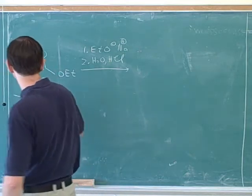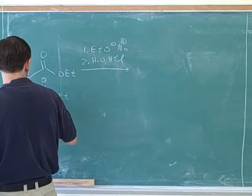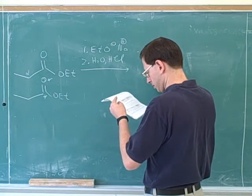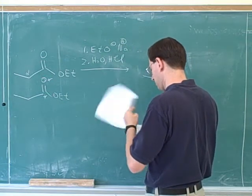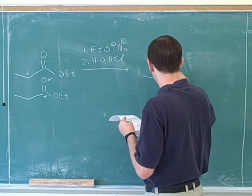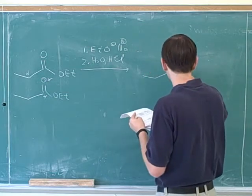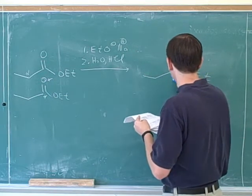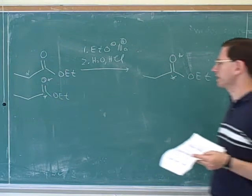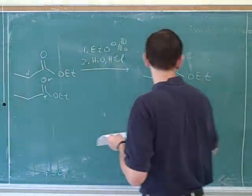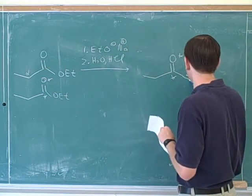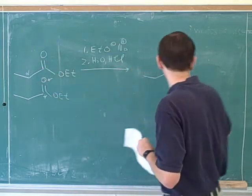We're going to do another Claisen condensation. We can pick one molecule to have the nucleophilic alpha carbon and one to be the electrophile. So here's the electrophile. We know that in the Claisen condensation, the electrophile is going to lose its leaving group and that's going to be replaced by this nucleophile. Here's the alpha carbon connected to—on one side, the alpha carbon is connected to a methyl group and on the other side, it's connected to carbonyl.